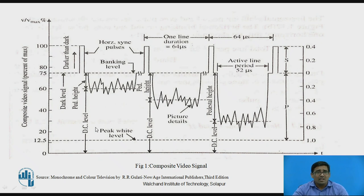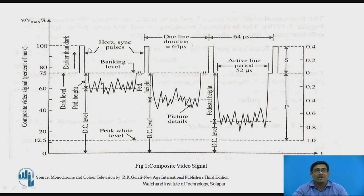Up to 75% shows the camera signal and above 75% to 100% shows the synchronizing pulse. If you observe the camera signal, there are two parts: a white level part and a dark level part. The lower part of the camera signal consists of the white level and the upper part consists of the dark signal. Above 75% to 100% is the horizontal synchronization pulse, used for synchronization at both transmitter and receiver side. The total time for one line duration is 64 microseconds, with the active line period being 52 microseconds.